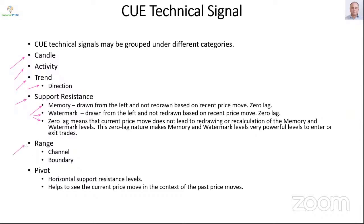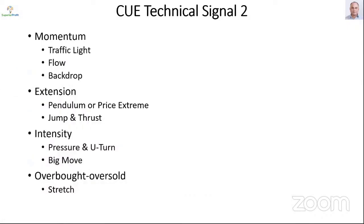In Part 2, we covered range indicators, channel and boundary, pivot category of indicators — these are horizontal support and resistance levels — in daily charts for quarterly, yearly pivots and also intraday pivots in fine-tuned chart. Then we continued to the momentum indicators: pivot category of indicators, traffic light for daily interval, flow — a special case of traffic light — and backdrop for weekly interval.